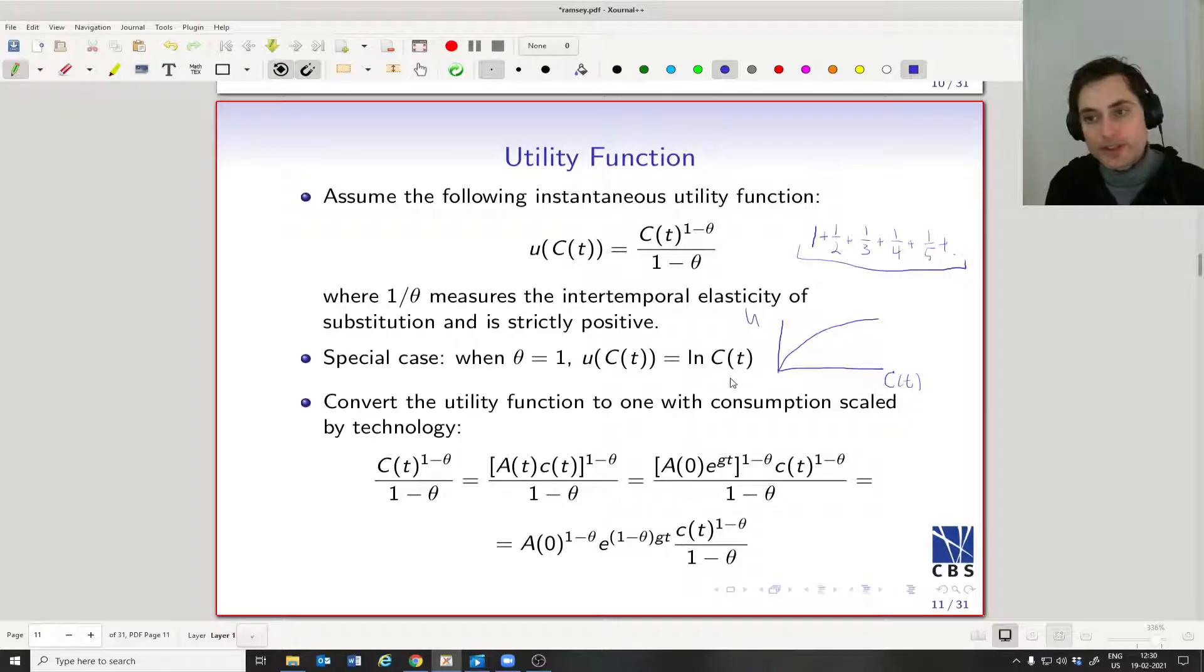So we want to put the utility function—we've got c(t) here, that's consumption per person. Because we've written the budget constraint and we're going to be dealing mostly in this model with per effective labor or per unit of human capital terms, let's do the same with the utility function. We recall that we've defined little c(t) as big C(t) divided by A, so we can substitute out big C(t) with this expression, which is the education level times consumption per unit of human capital.